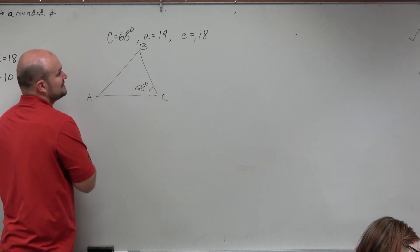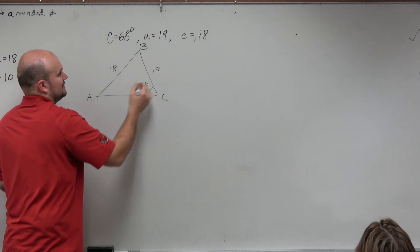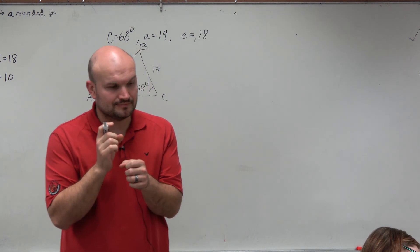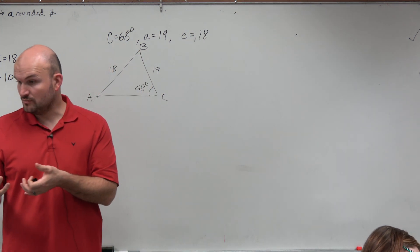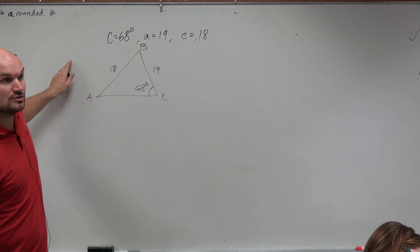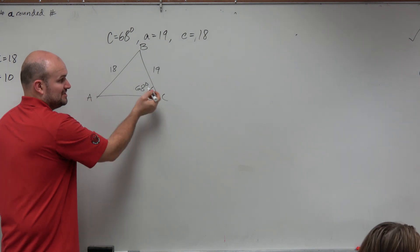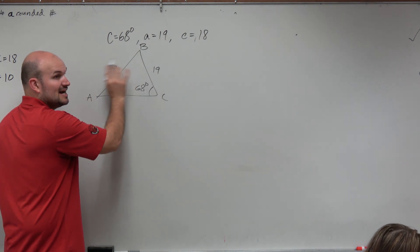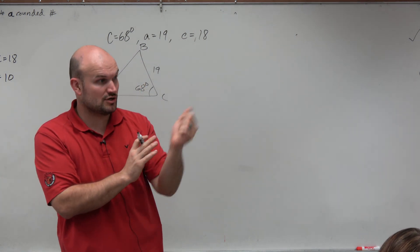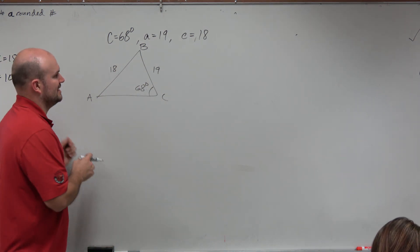We know angle C equals 68, that side is 18, side a would be 19. But we know when we have the case of our ambiguous case, we could have an issue with this being an obtuse triangle as well. We'll look at that when it comes up.